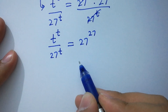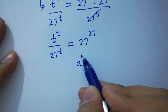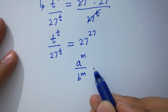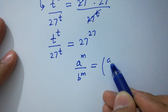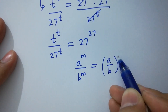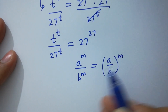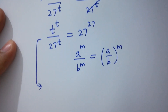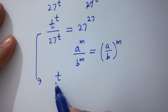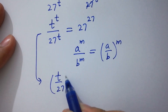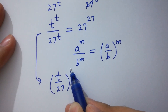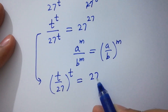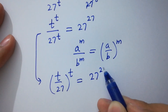Since a to the power m over b to the power m equals a over b to the whole power m, we have t over 27 to the power t equals 27 to the power 27.